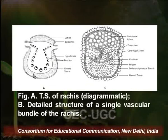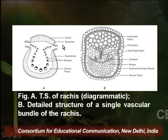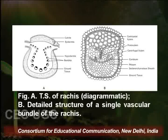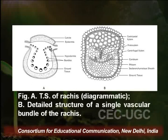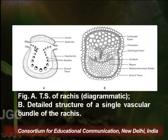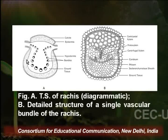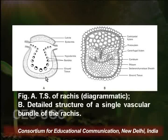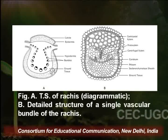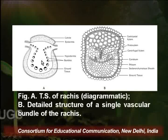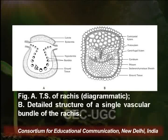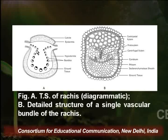We can understand this structure with the help of this diagram, where you can see that the TS of rachis has a large abaxial side and a small adaxial side. In this large abaxial side, the vascular bundles are present in an inverted omega-shaped arrangement. The rachis TS has an epidermis on the outermost side, followed by a few cell thick hypodermis and then there is a parenchymatous ground tissue. In this parenchymatous cortex or ground tissue, multiple vascular bundles are arranged.